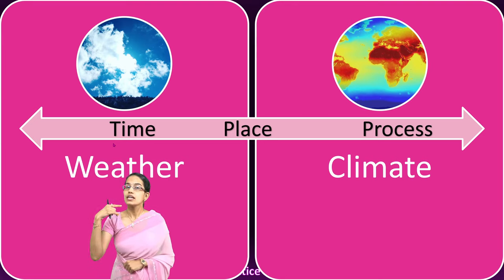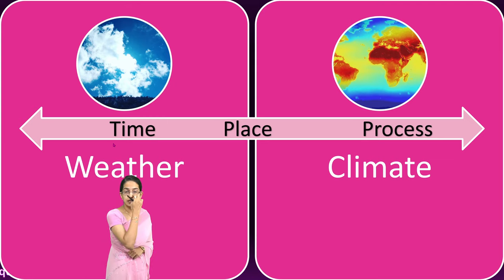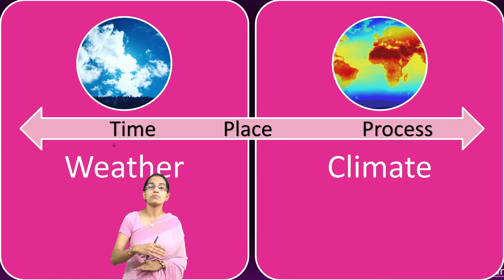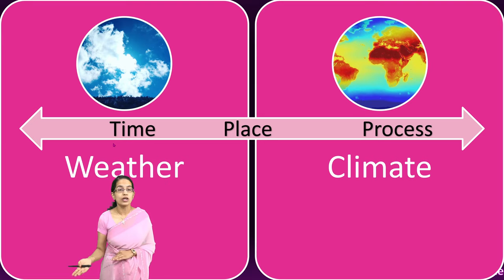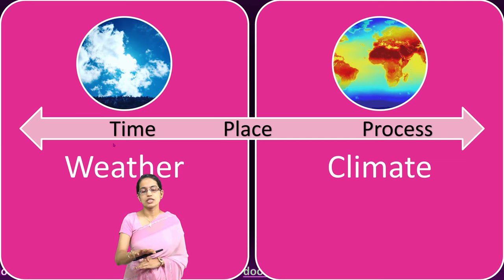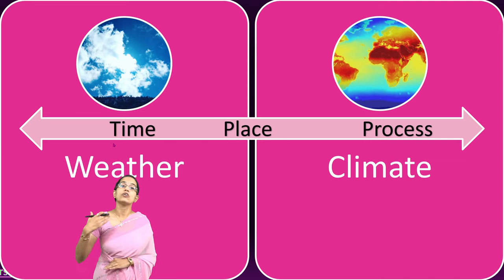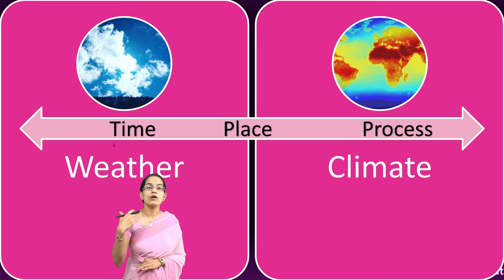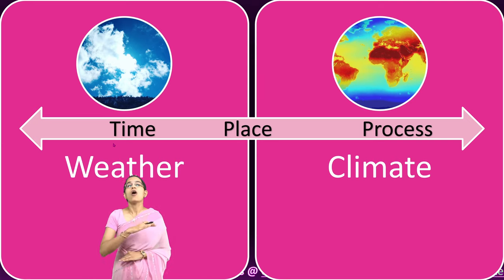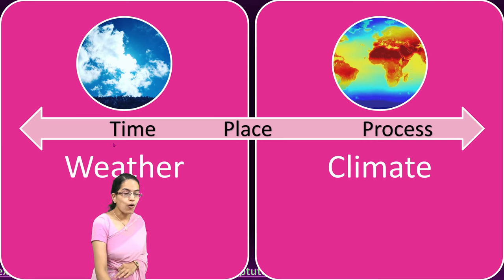Before getting to that difference, let's understand on what parameters we forecast weather and how we do it. There could be weather satellites, ships, weather rockets, or geostationary operational environmental satellites. These geostationary operational environmental satellites are used to monitor the weather continuously — floods, hailstorm conditions, dry weather — all analyzed through these satellite monitoring stations.